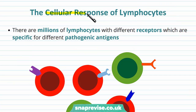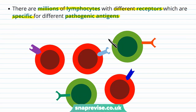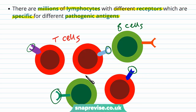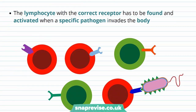Now that we know their function, we need to talk about the cellular response that lymphocytes carry out when exposed to a new pathogen. There are millions of lymphocytes floating around the body, each with very different receptors of specific shapes, and each receptor is specific for a different pathogenic antigen. T cells have these receptors in their membranes to bind to infected body cells, and B cells send out antibodies — another version of those receptors. Every unique B and T cell has its own very specific receptor, waiting to meet the antigen by fate. When a pathogen invades, the lymphocyte with the correct receptor must be found and activated.